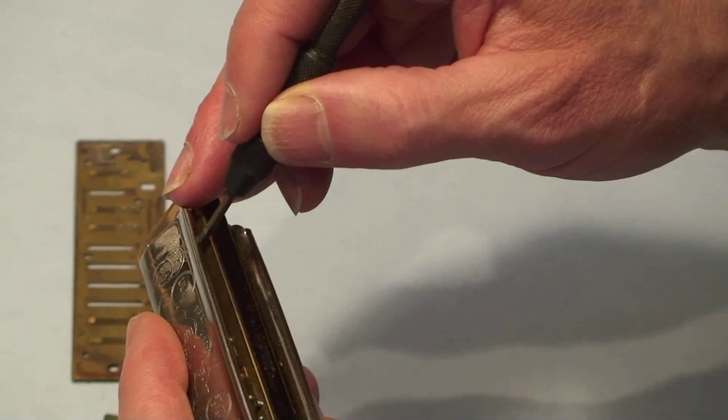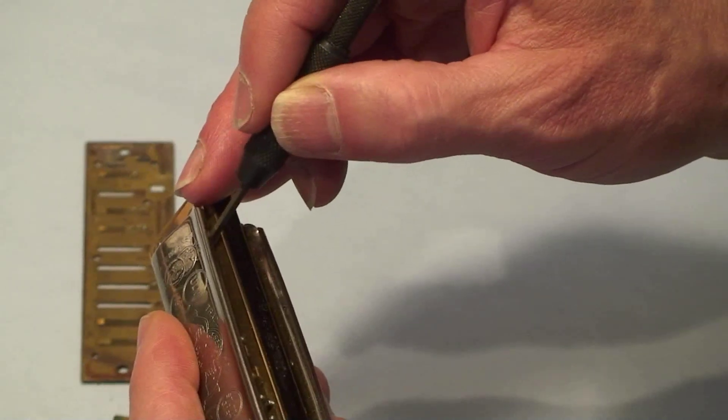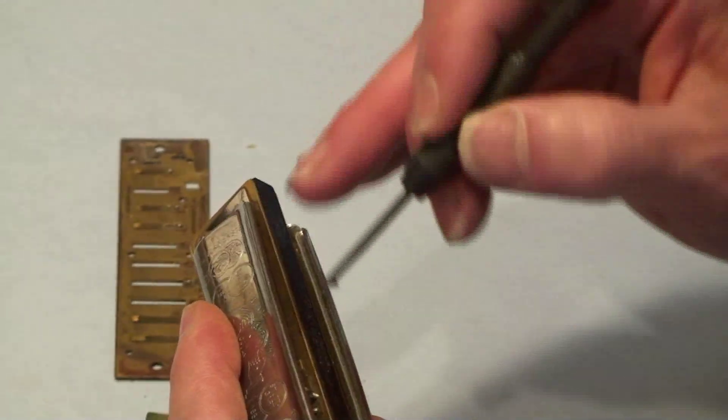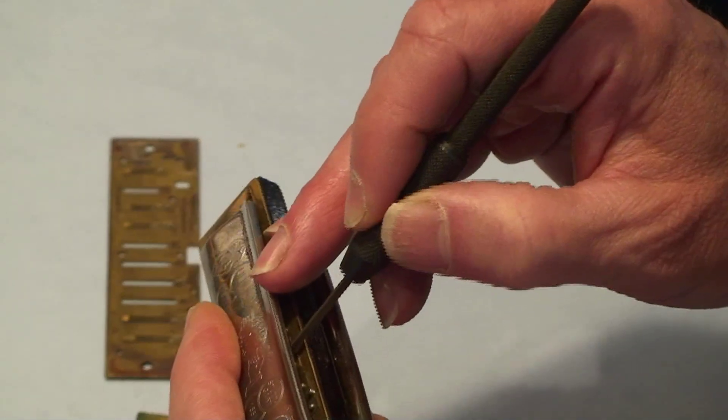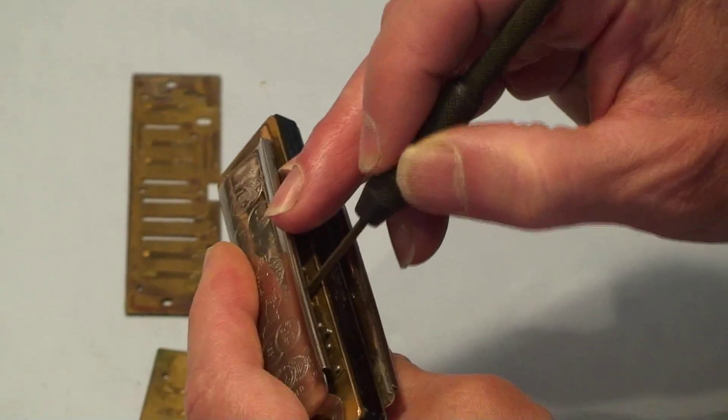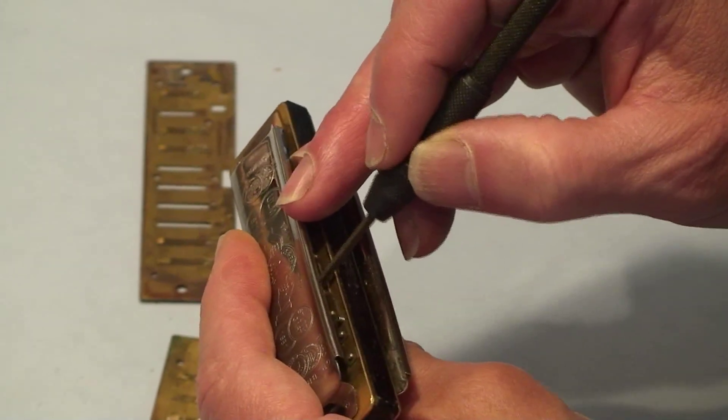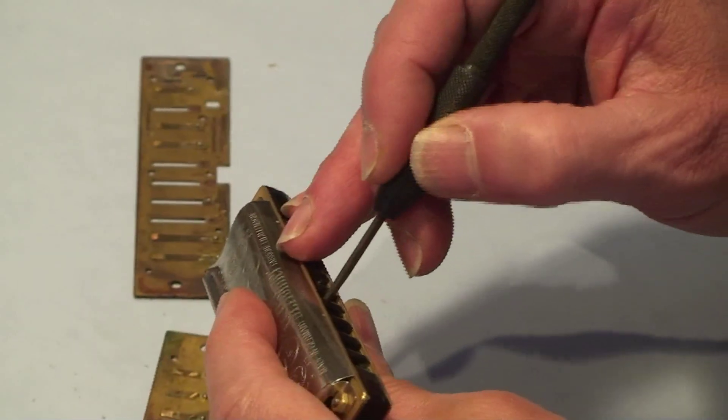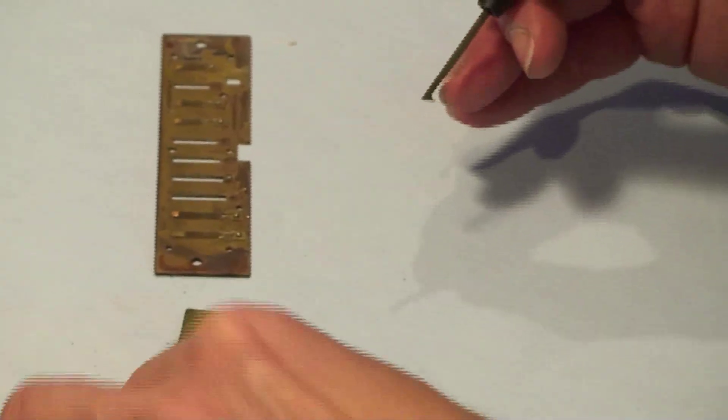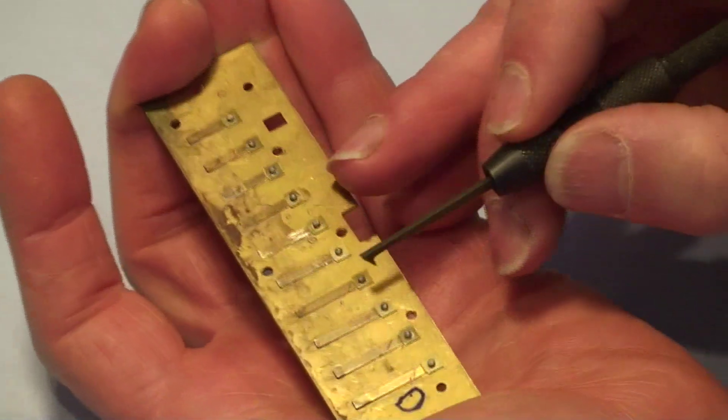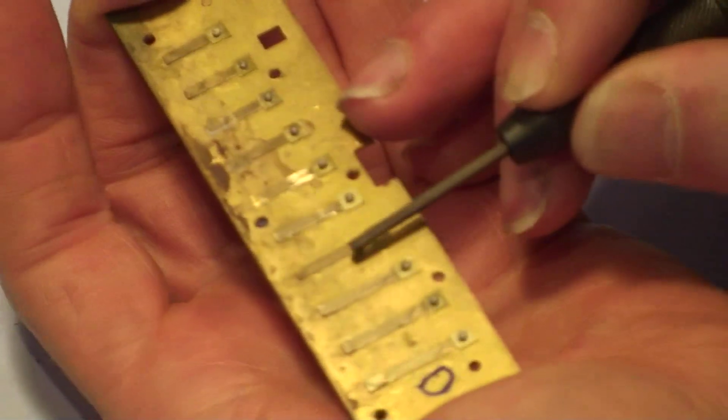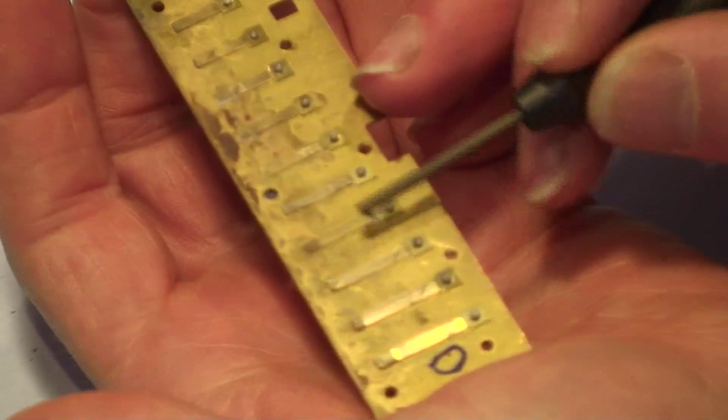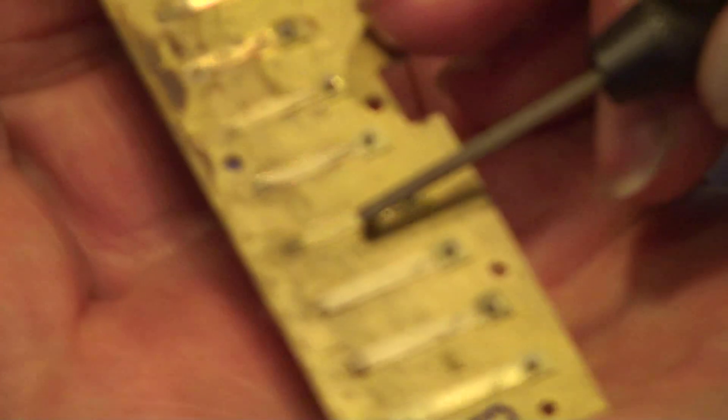Find the reed and drop the pitch of the reed without taking the harmonica apart. So with the combination of the right reed plate clearance, you can drop the pitch of the draw notes and the blow notes with this, once you get used to the feel of the reeds as you tune. That shows you some of the things you can do with this instrument here.